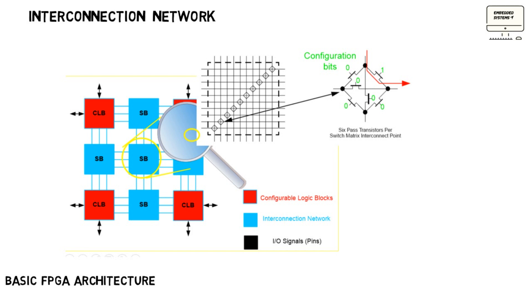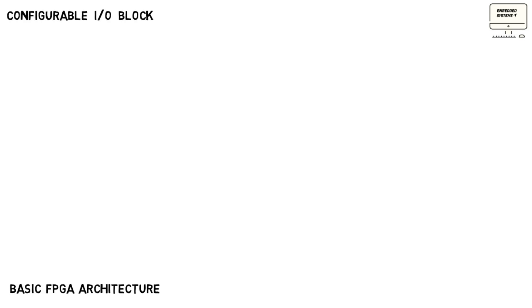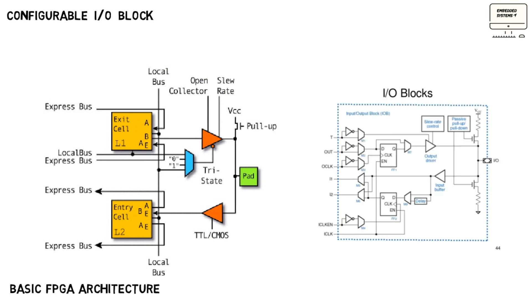It consists of multiplexers, pass transistors, and three-state buffers, which form the desired connection. The programmable input-output blocks are used to interface the logic blocks and the routing architecture to the external components. An input-output pin in the input-output block can be used for an input and output both.